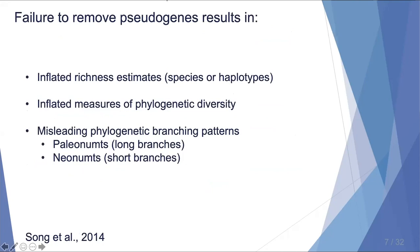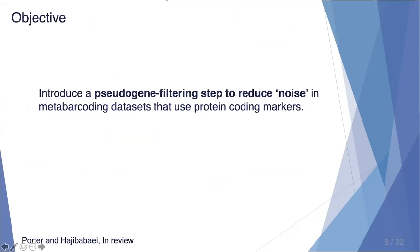These sequences are easy to spot if they result in a truncated sequence due to a frameshift mutation or a premature stop codon. If we don't remove these pseudogenes, this can result in inflated richness estimates at the species or haplotype level, inflated measures of phylogenetic diversity, and misleading phylogenetic branching patterns. The objective of this project is to introduce a pseudogene filtering step to help reduce noise in metabarcoding datasets that use protein coding markers.